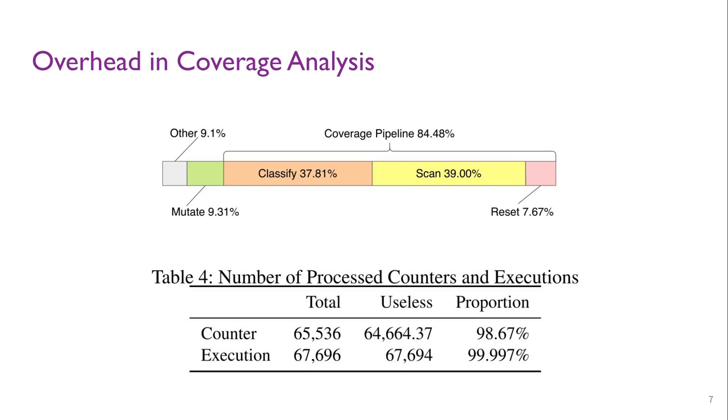The figure above presents the breakdown of execution costs for AFL-fuzz. It first mutates the input. After the execution completes, it classifies the coverage bitmap, scans bitmap for new coverage, and resets the memory for the next run. In other words, to detect new program states, AFL-fuzz spends 84% of its valuable CPU time on the coverage pipeline. However, the high CPU time results in low yields.